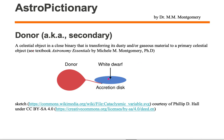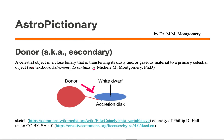In this case we have a close binary, we have a donor secondary, and a white dwarf primary. The donor is transferring its mass to the white dwarf primary by an accretion disk. The donor is the one donating the material to the other star in the close binary.